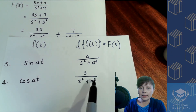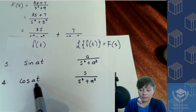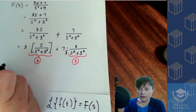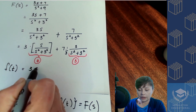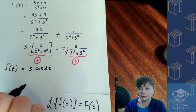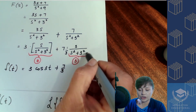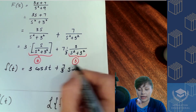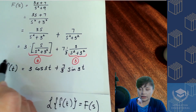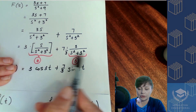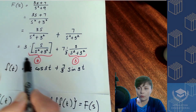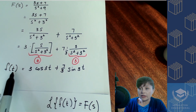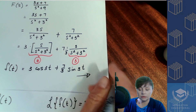Both terms are now in exactly the same form as on the formula sheet. Entry number four corresponds to a cosine form with a equal to three, and entry number three corresponds to a sine function. So f of t equals three cos of three t, plus seven over three times sine of three t. Please do not forget to write f of t — without it you are implying those expressions are equal to each other, when in fact this is just a different form. You have now converted from f of s to f of t using the inverse Laplace transform, and that is your solution.